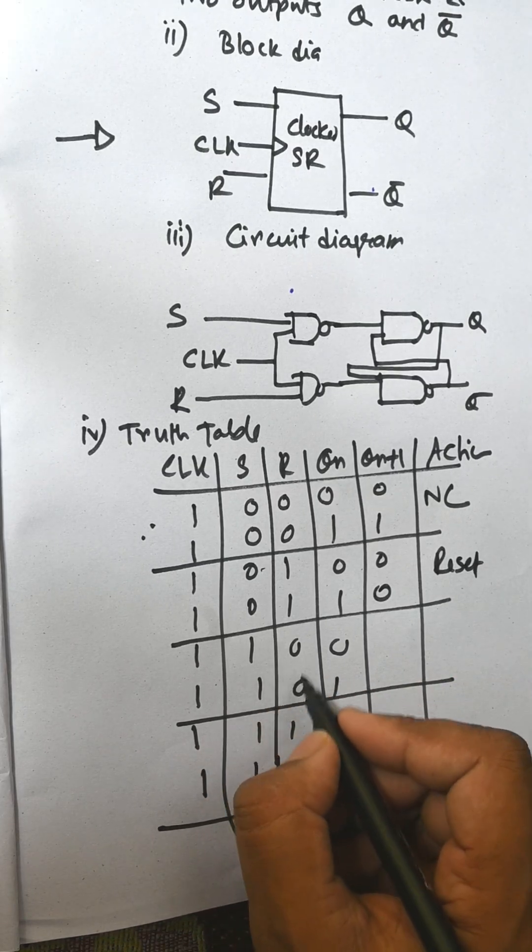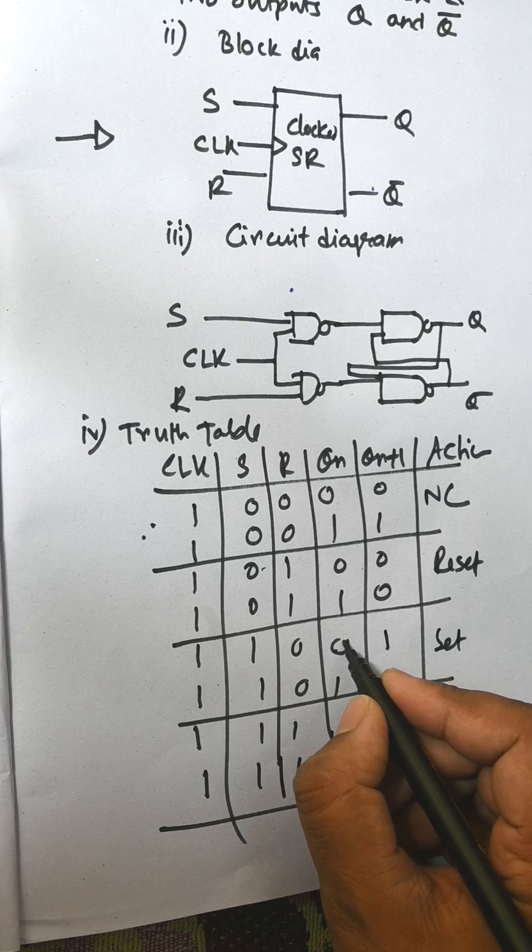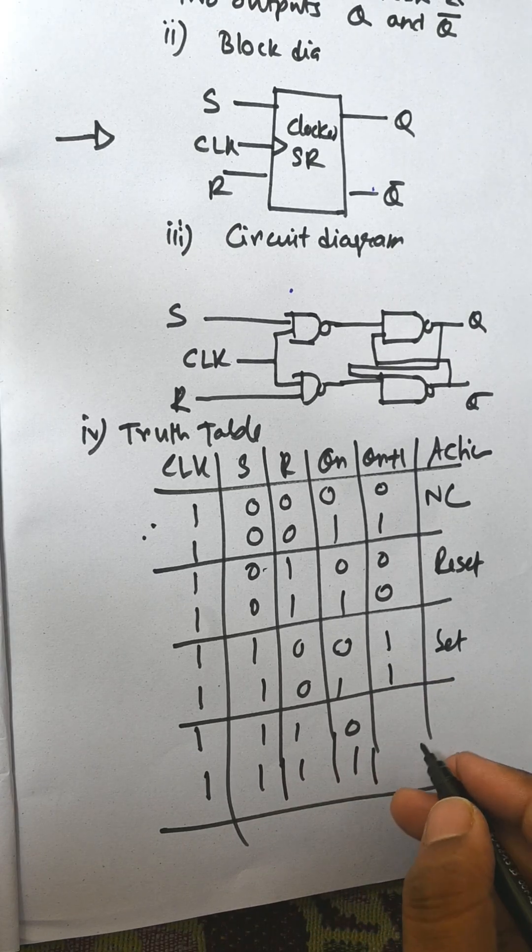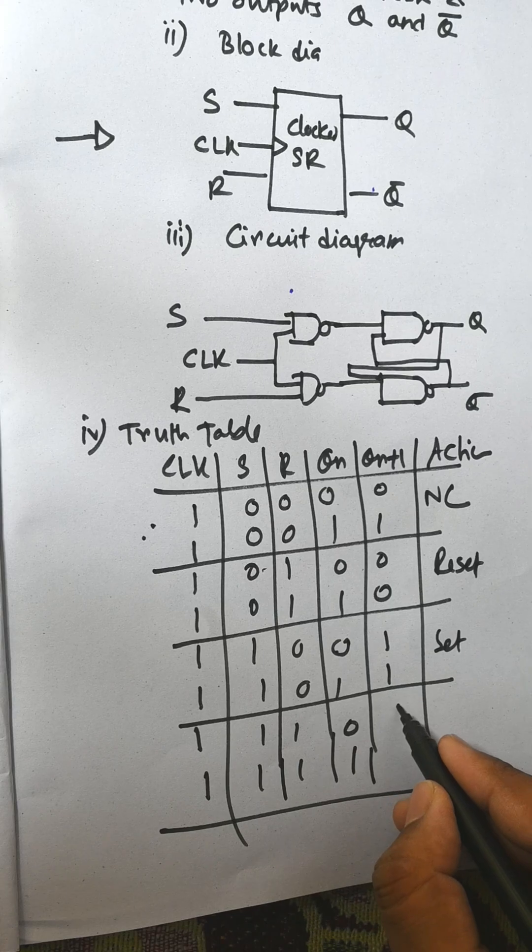And for 1-0, 1 remains 1, and for 1-1 this is invalid.